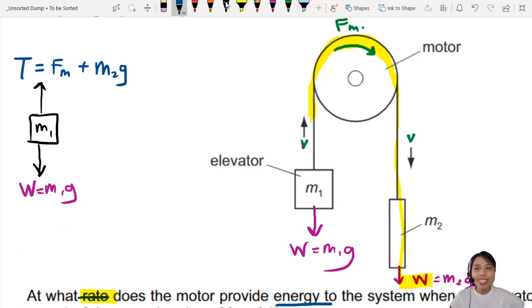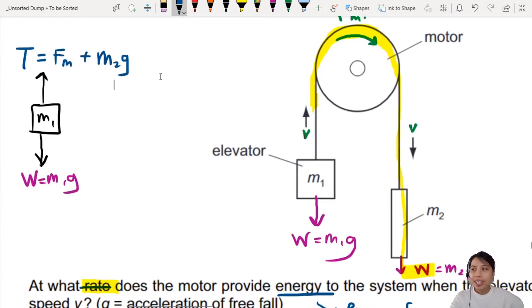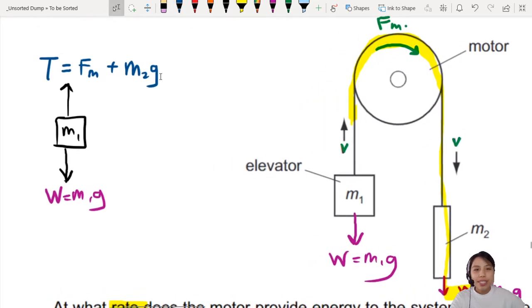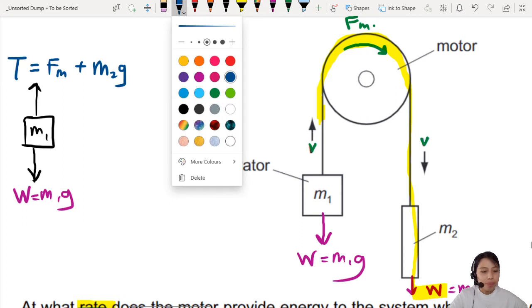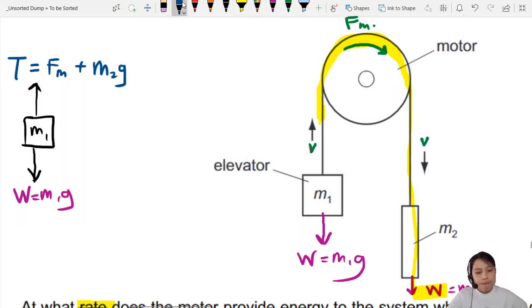Now what do we do? What's the next step? With this in mind, we can use Newton's Second Law already. So Newton's Second Law is going to be the net force equals to mass times acceleration. So let's write that out.